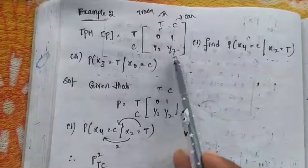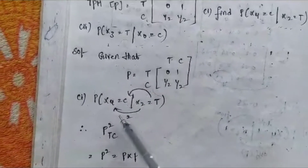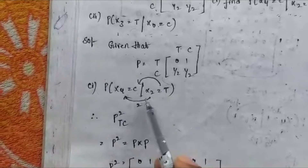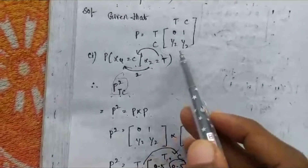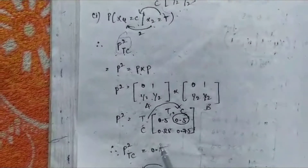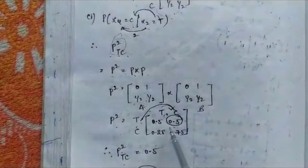For P(X4=Car | X2=Train): the difference between periods X2 and X4 is 2, so we take P squared, moving from Train to Car. We calculate P squared = P × P, taking one P as matrix A and one P as matrix B and computing in the calculator. From the P squared matrix, the value from Train to Car is 0.5. Therefore P²(Train→Car) = 0.5.